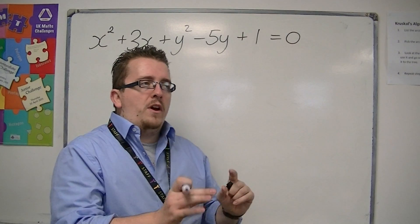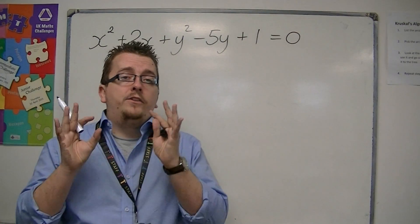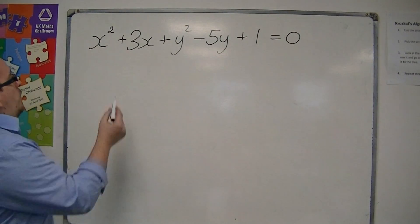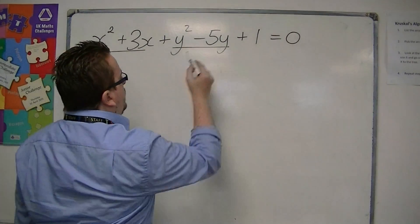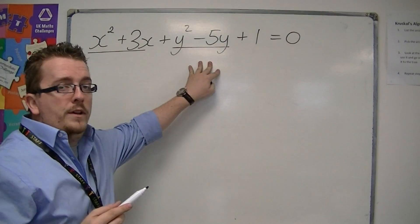And now I'm being asked to find me the coordinates of the centre and find me the radius of the circle. So what I'm going to do is I am going to complete the square of the two parts, the x's and the y's.